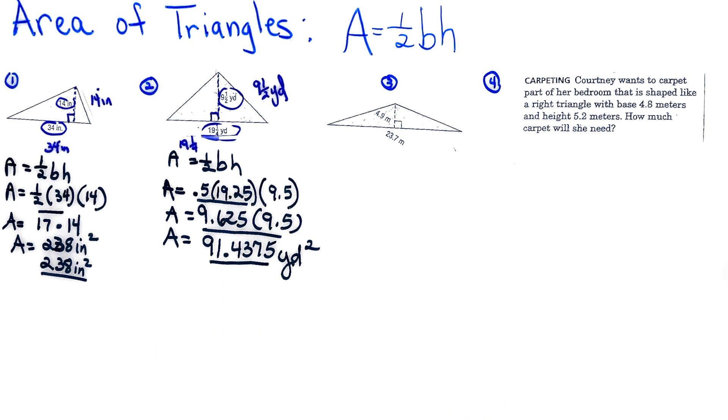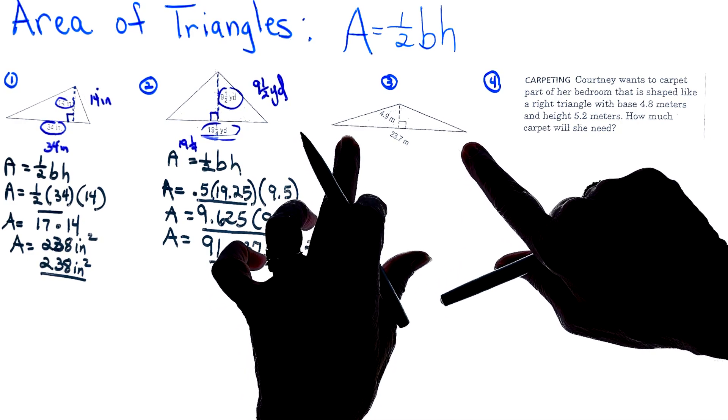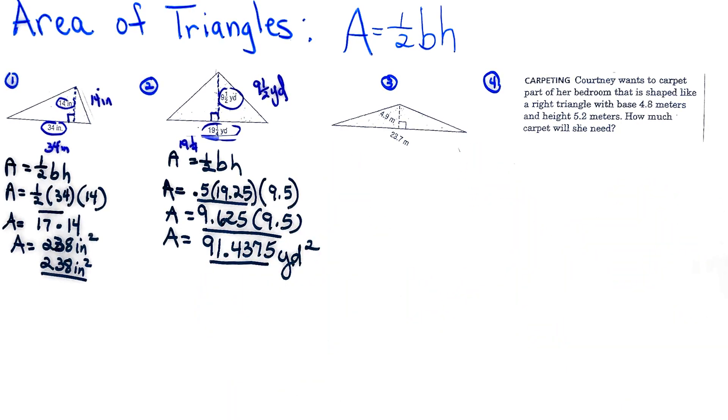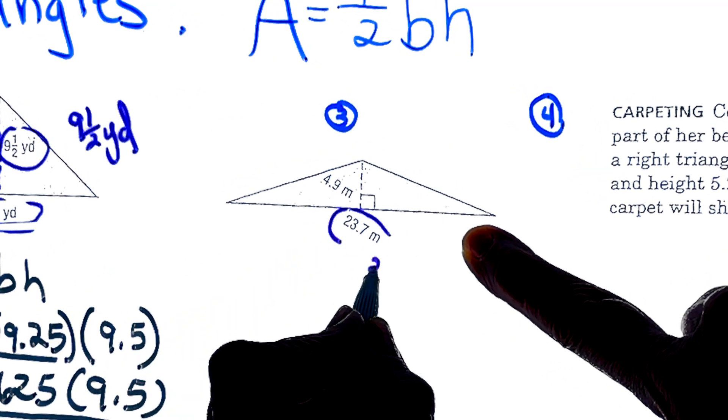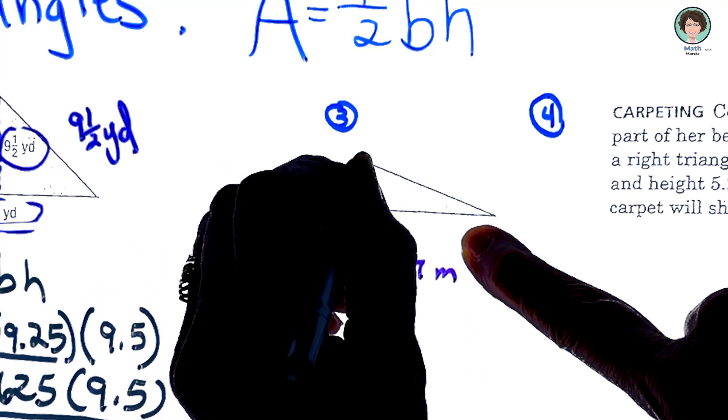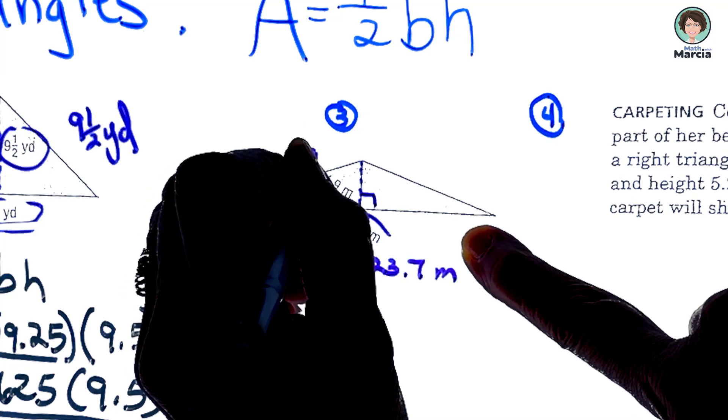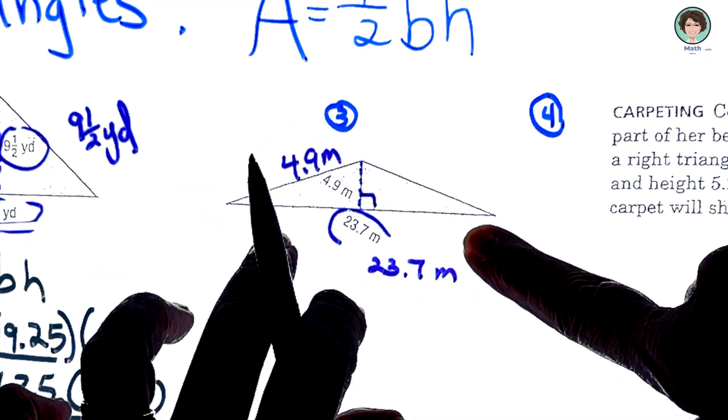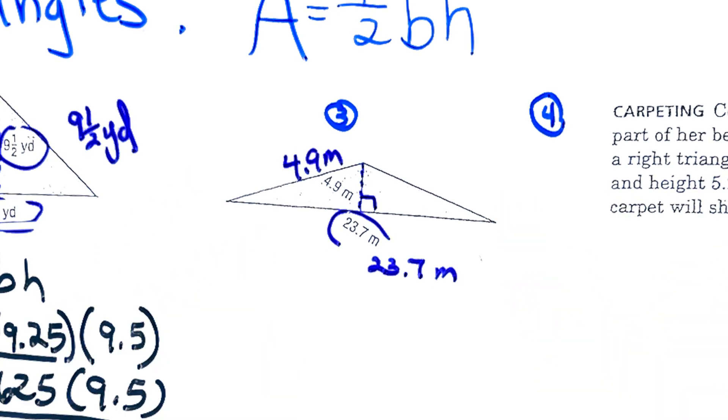Looking at number three, it is definitely smaller numbers that we're dealing with. I see that my base here is 23.7 meters. My height hits the base at 90 degrees and that is 4.9 meters. I'm just rewriting it in case you cannot see those numbers very clearly.